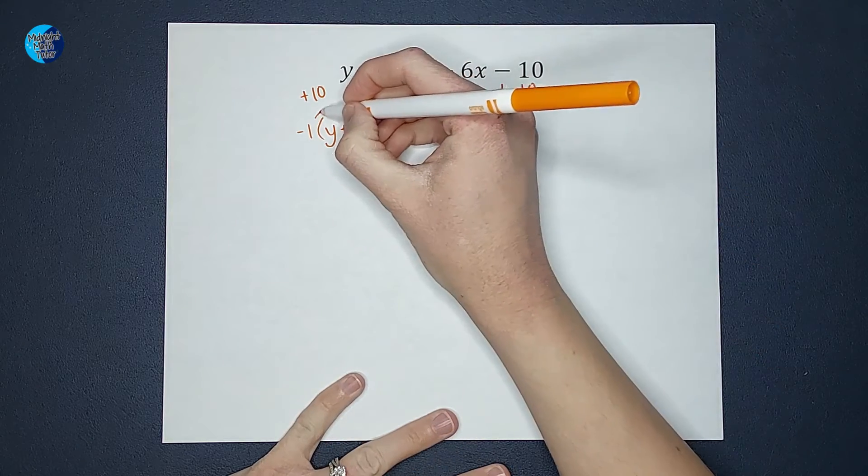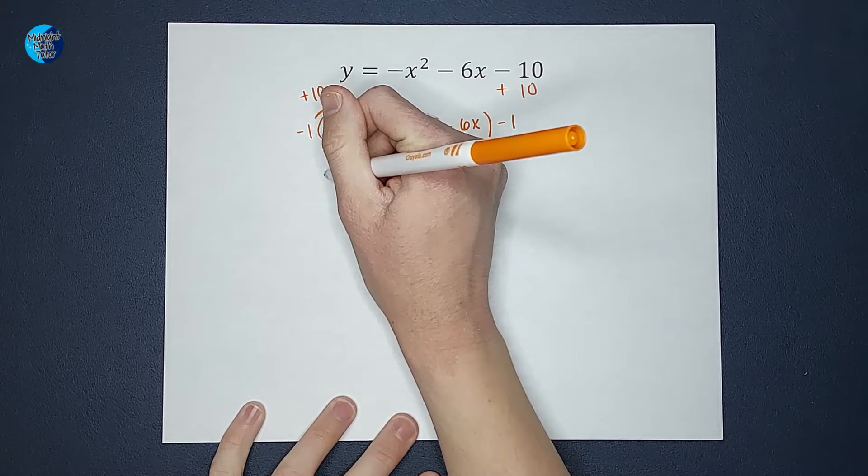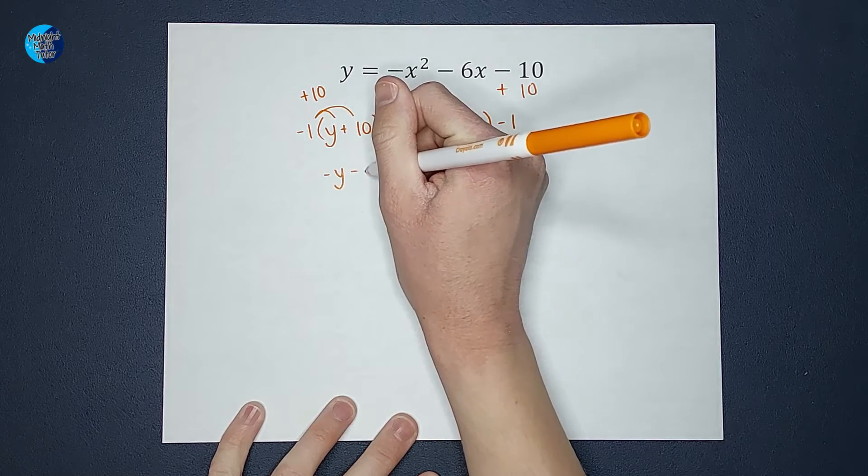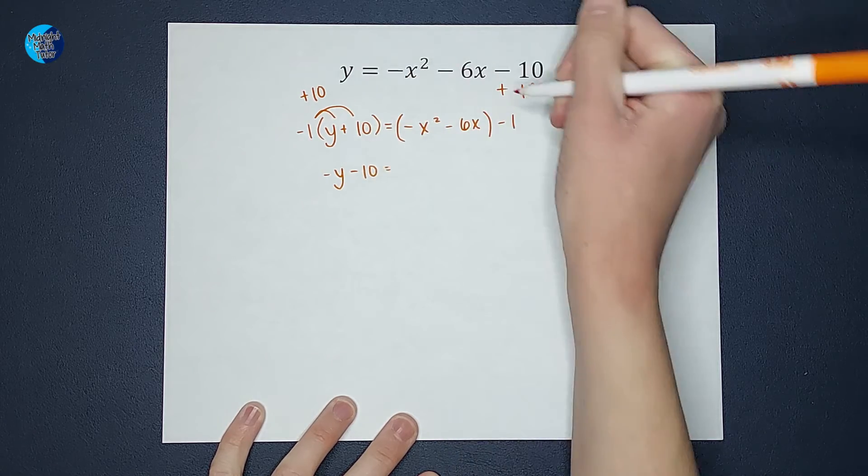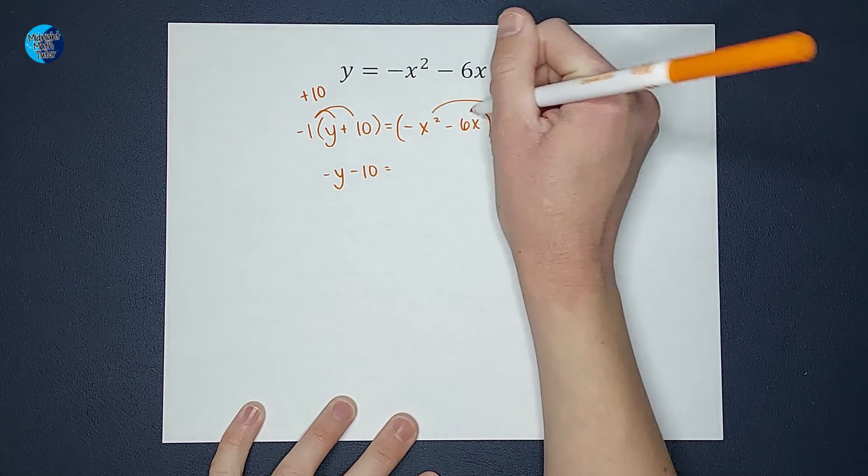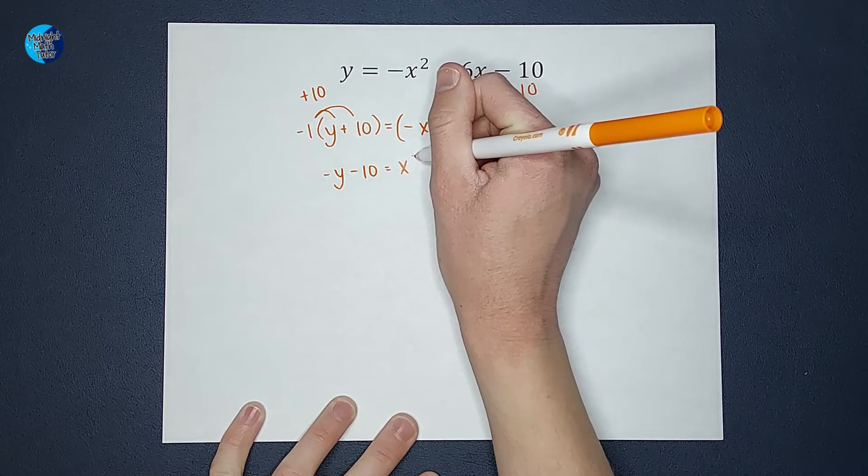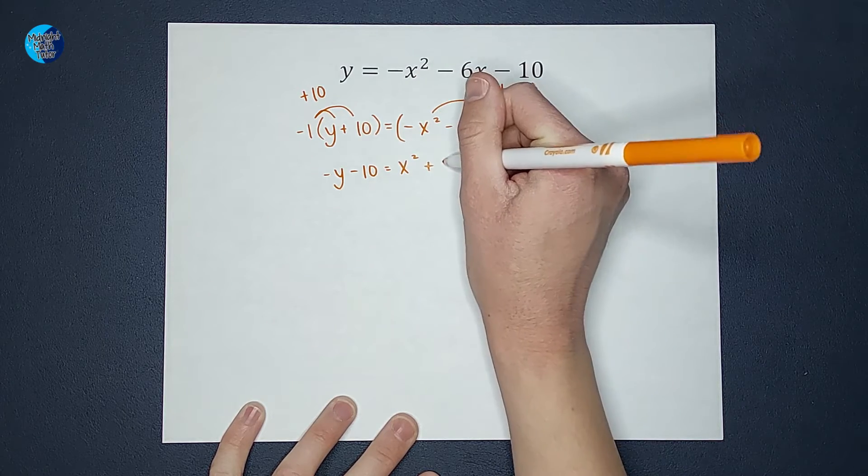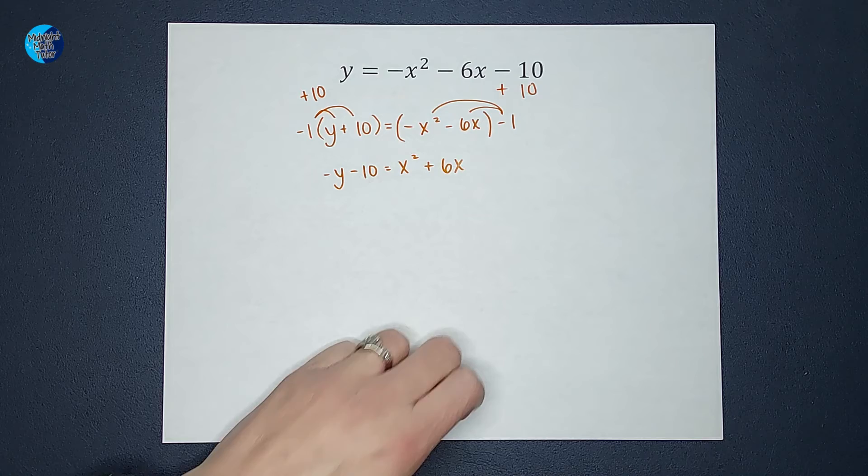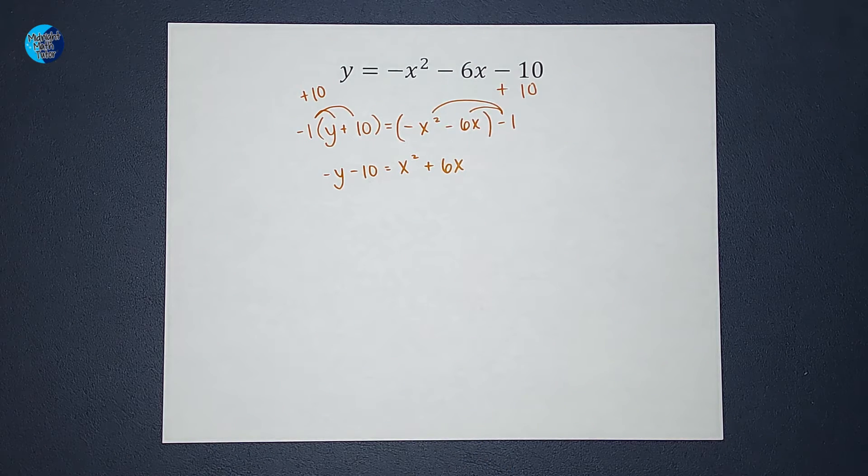So when I multiply that negative one in, I end up with negative y minus 10. And over here, I end up with x squared plus 6x. All right, now I'm feeling ready to complete the square.